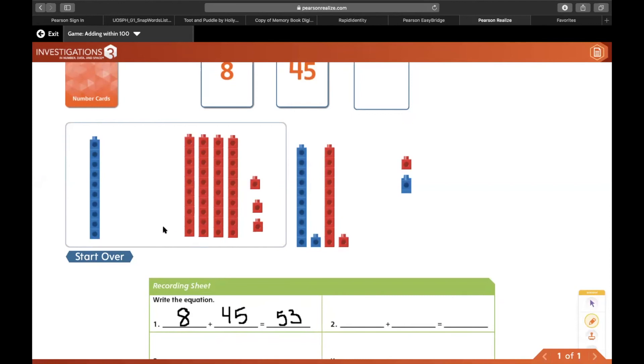All right, so we didn't take away, we took these single cubes and put them over here, but we didn't change the amount of cubes that we're adding. We just changed the way they looked. We always had those 10 single cubes. We just had to rearrange them and make them into a stack of 10. So we're still adding 8 and 45. It just looks different now.